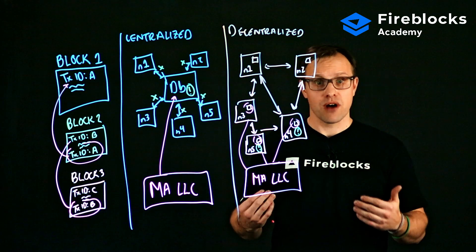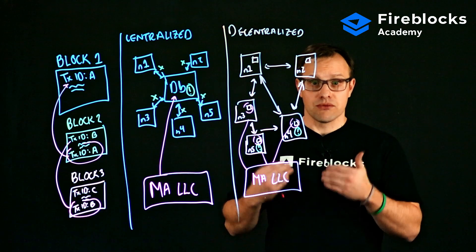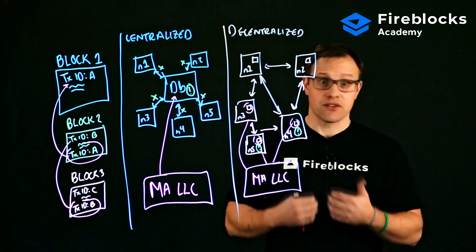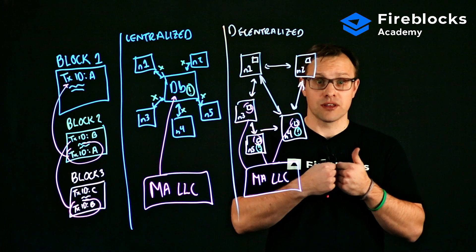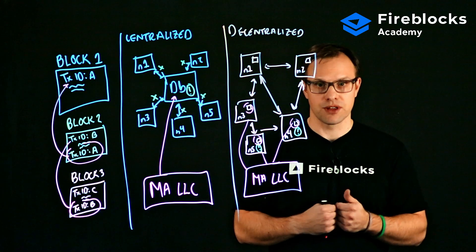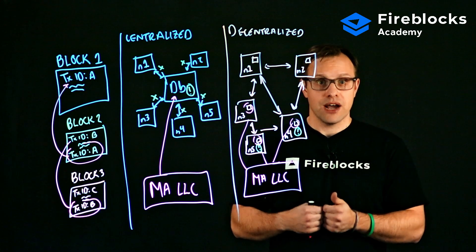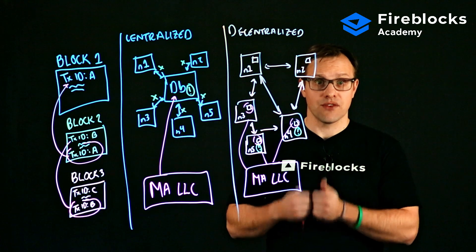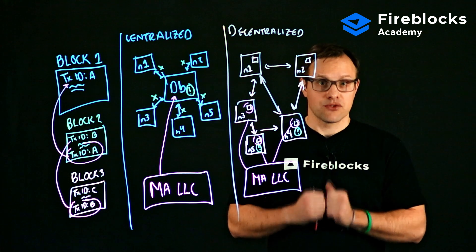So to summarize, blockchains are really just decentralized ledgers or databases of transactions. They are typically resilient and they are typically immutable, which is just another word for tamper-proof. That's it for now. For more educational resources, please visit us at Fireblocks Academy. Thanks for joining.